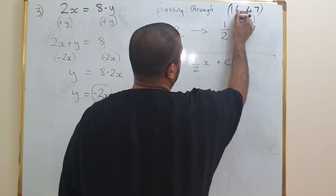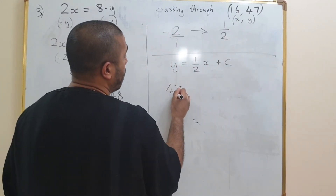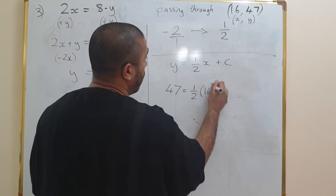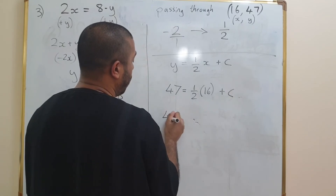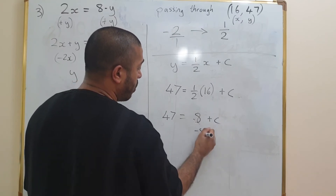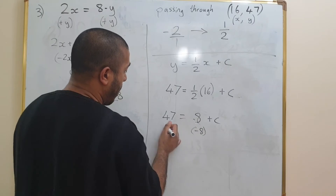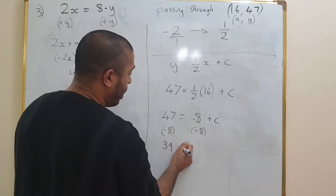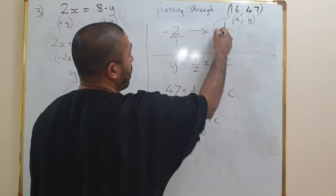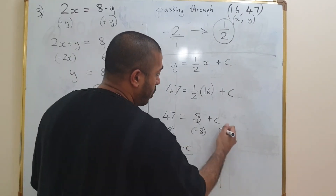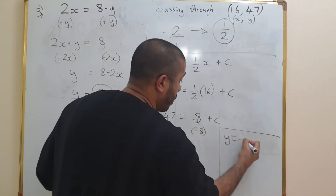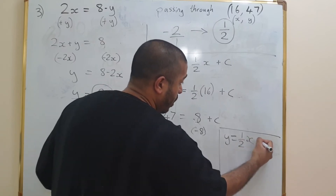Plug in x equals 16 and y equals 47. So 47 equals one half times 16 plus c. Half of 16 is 8, so 47 equals 8 plus c. Subtract 8 from both sides and we get 39 equals c. With gradient one half and c equals 39, the final equation is y equals one half x plus 39.